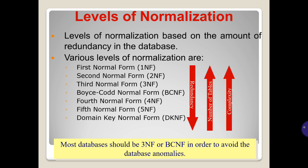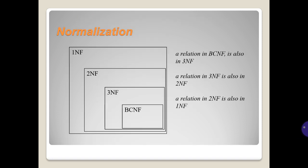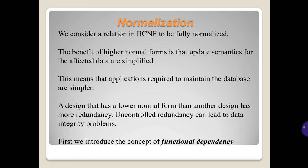Most databases should be in 3NF or BCNF in order to avoid database anomalies. Each higher level is a subset of the lower level. A relation in BCNF is also in 3NF, a relation in 3NF is also in 2NF, and a relation in 2NF is also in 1NF. We consider a relation in BCNF to be fully normalized. The benefits of higher normal forms are that update semantics for the affected data are simplified, meaning applications required to maintain the database are simpler.